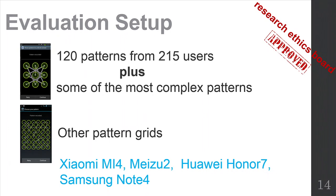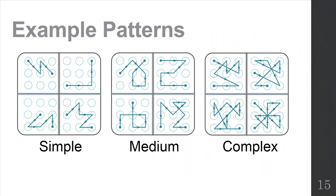We total collected 120 unique patterns from 215 users. We also collected some of the most complex patterns. We evaluate different pattern grids. The devices used in our experiment are Xiaomi 4, Meizu 2, and so on. And we divided the collected patterns into three categories: simple, medium, and complex. This shows some example for each categories.